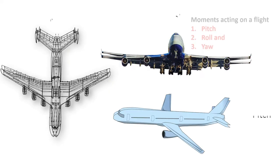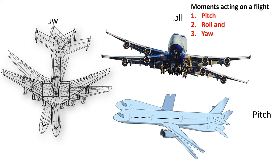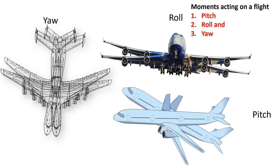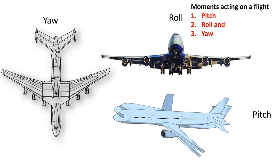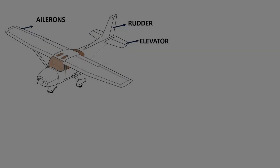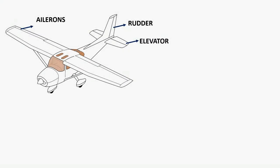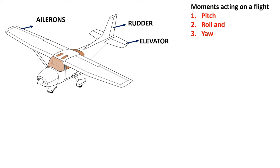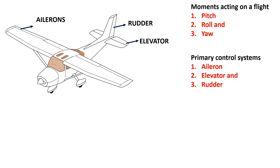Now let us focus on moments. The moments acting on an aircraft are pitching moment, rolling moment and yawing moment. For clear explanation, we must first learn about the primary control systems which help to control the moments. The primary control systems are the aileron, the elevator and rudder, which are used by the pilot to control the aircraft about the three axes of rotation.